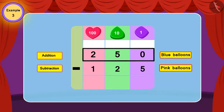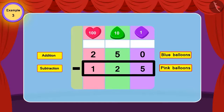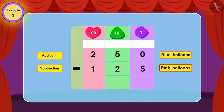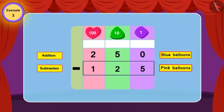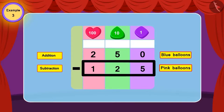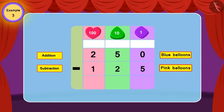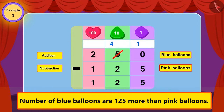For this, from 250, 125 is to be subtracted. And now we can see that the number of blue balloons are more than pink balloons by 125.